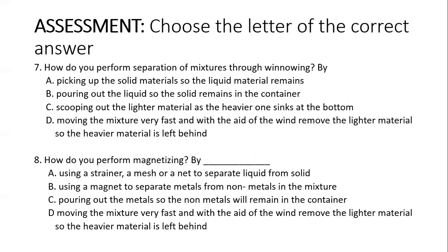Number 7: How do you perform separation of mixtures through winnowing? A. Picking up solid materials so the liquid materials remain. B. Picking up solid materials so the solid remains in the container. C. Scooping out the lighter material as the heavier one sinks at the bottom. Or D. Moving the mixture very fast and with the aid of the wind, remove the lighter material so the heavier material is left behind. Number 8: How do you perform magnetizing? A. Using a strainer, mesh, or net to separate liquid from solid. B. Using a magnet to separate metals from non-metals. C. Pouring out the metals so the non-metals remain in the container. Or D. Moving the mixture fast with the aid of the wind to remove the lighter material.